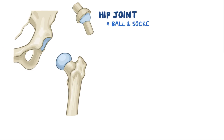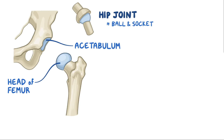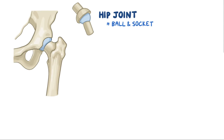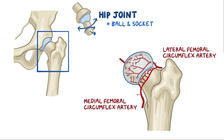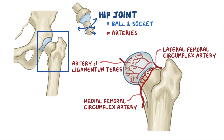The hip joint is a ball-and-socket type because the ball-shaped head of the femur sits and rotates inside the cup-shaped socket called the acetabulum. This gives the hip joint the ability to move nearly in all directions, as long as the ball can smoothly rotate inside the socket. The head of the femur is supplied by branches of three arteries: the medial and lateral femoral circumflex arteries, as well as the artery of ligamentum teres. These arteries and branches climb up the neck of the femur to supply the head of the femur, providing the tissue with the nutrition it needs to grow and maintain its spherical shape.